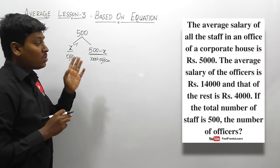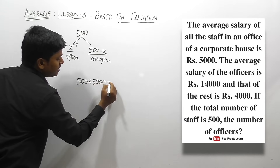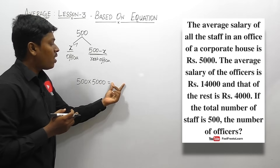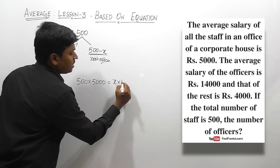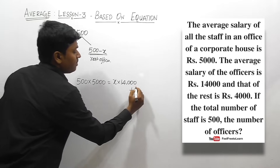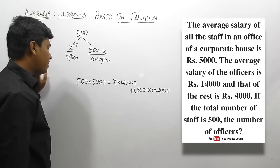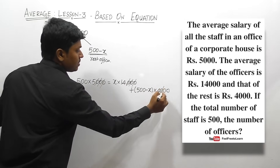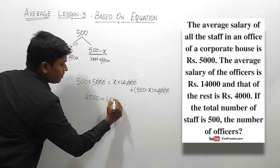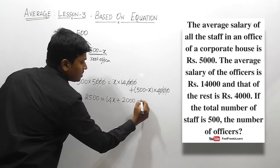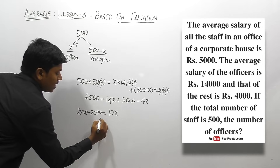We frame the equation: 500 into 5,000 equals total salary of officers plus total salary of remaining staff. That is 14,000 into x plus 4,000 into (500 minus x). Cancelling three zeros gives 2,500 equals 14x plus 2,000 minus 4x. So 2,500 minus 2,000 equals 10x, giving 500 equals 10x, therefore x equals 50.